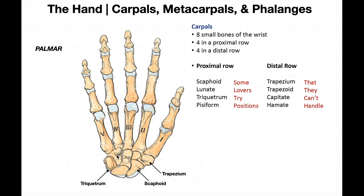So just to recap: intercarpal joints — plane synovial. Carpometacarpal joints of digits two through five — also plane synovial. The carpometacarpal joint between the trapezium and the first metacarpal, this CMC joint, is actually a saddle joint. The metacarpophalangeal joints — all of them — are condyloid joints. All of the interphalangeal joints — the two each in digits two through five, and the one in digit one — are all hinge joints. Hopefully this comprehensive video of the hand bones gave you a good understanding and framework for when we start talking about the muscles and connective tissue and fill in more details about the hand.